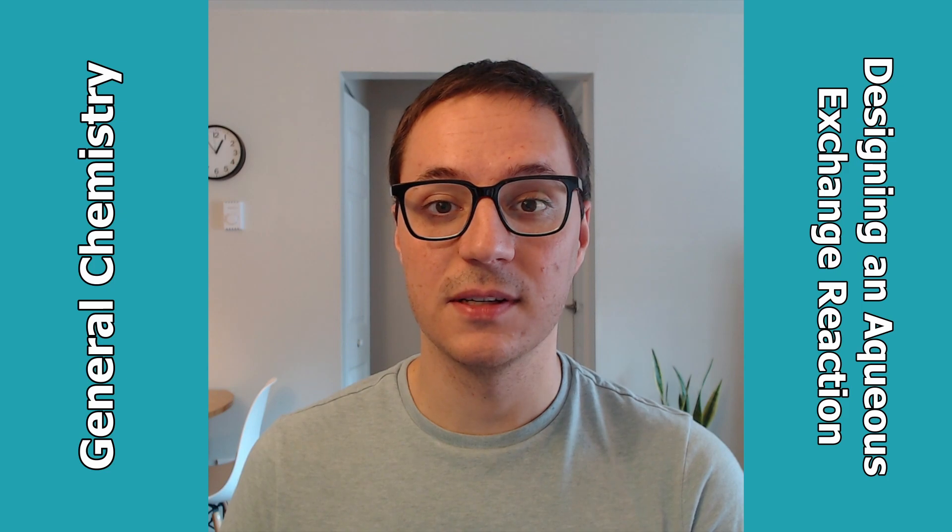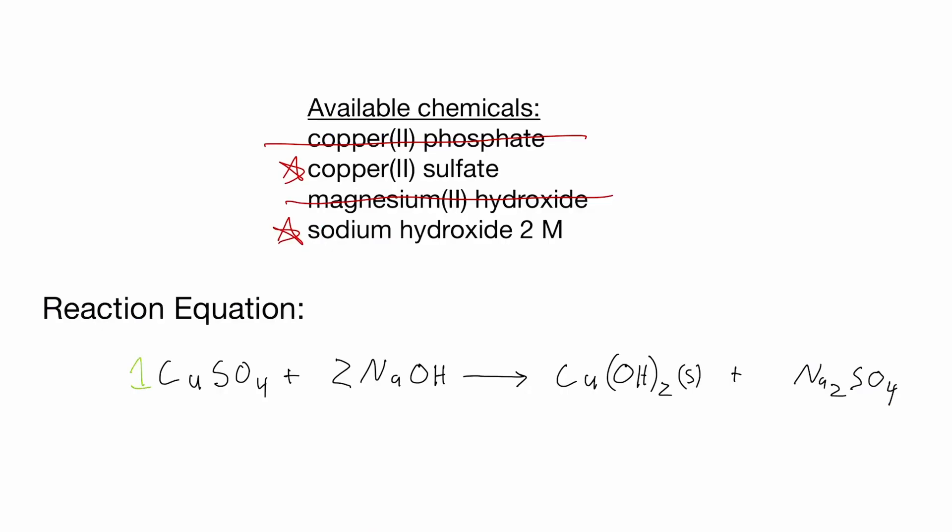What this equation tells us is that for every one mole of copper hydroxide product, we'll need one mole of copper sulfate and two moles of sodium hydroxide.